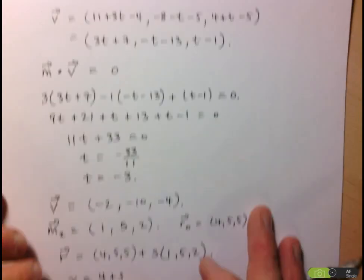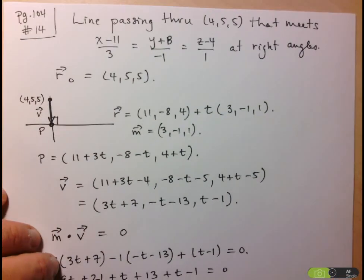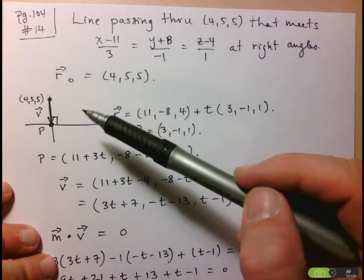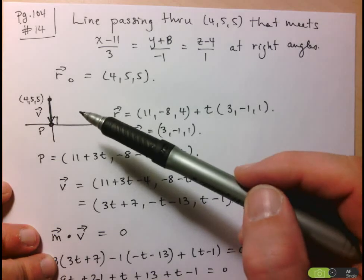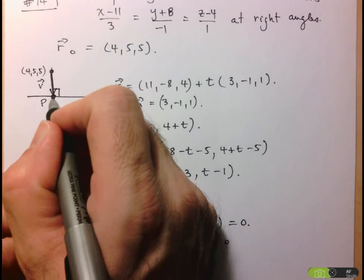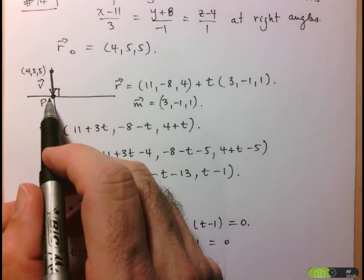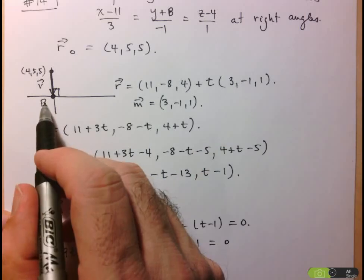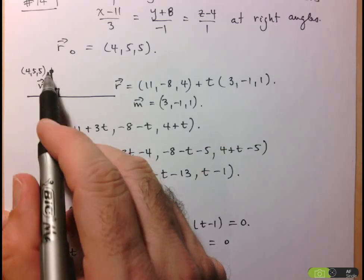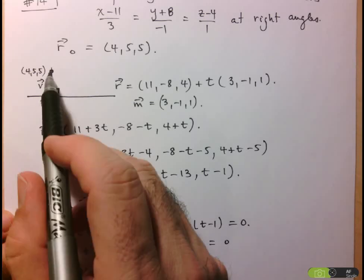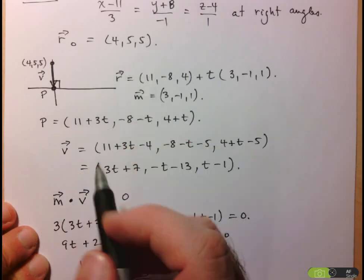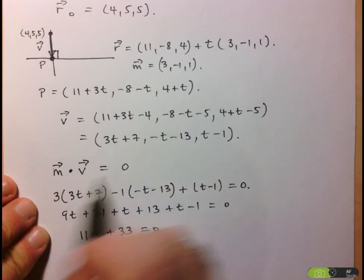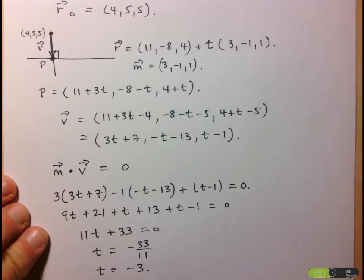To recap: to find the vector/parametric equation we needed a point — which was given — and a direction vector. We found the direction vector by expressing the unknown intersection point P using the given line's equation, then forming vector v from (4,5,5) to P. The key was using the dot product of two perpendicular vectors equals zero to solve for t.